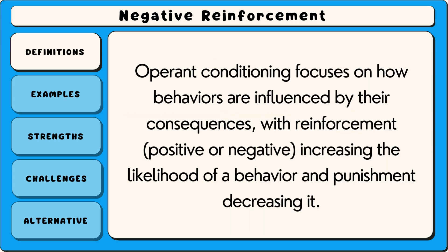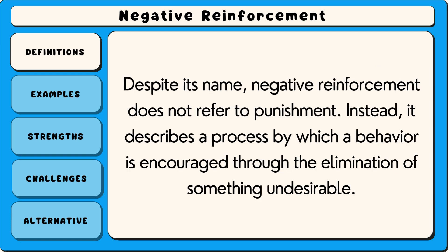Operant conditioning focuses on how behaviours are influenced by their consequences, with reinforcement — positive or negative — increasing the likelihood of a behaviour, and punishment decreasing it. Despite its name, negative reinforcement does not refer to punishment. Instead, it describes a process by which a behaviour is encouraged through the elimination of something undesirable.